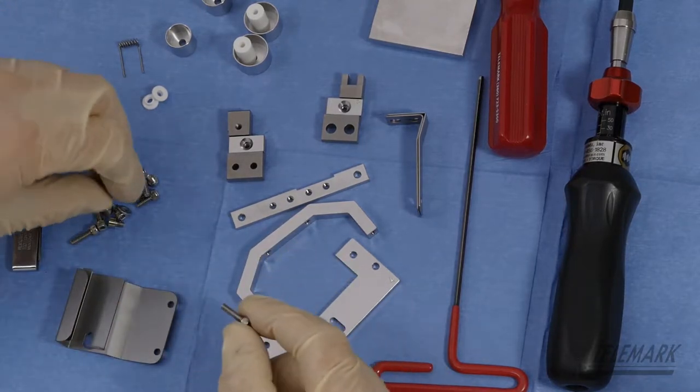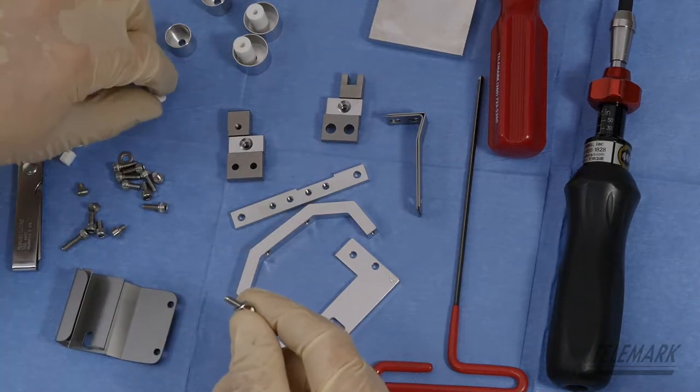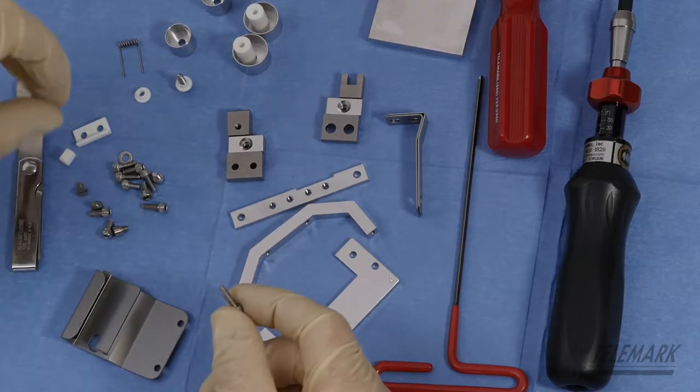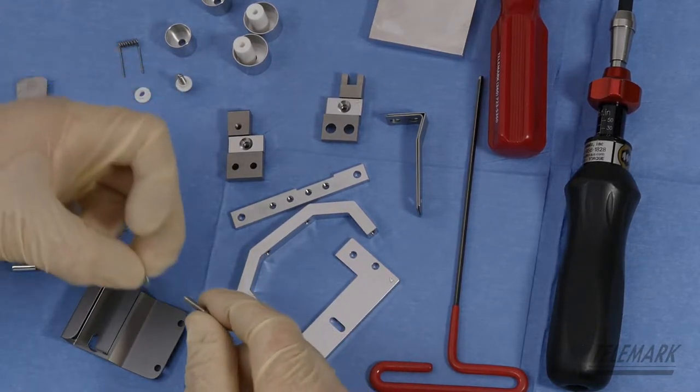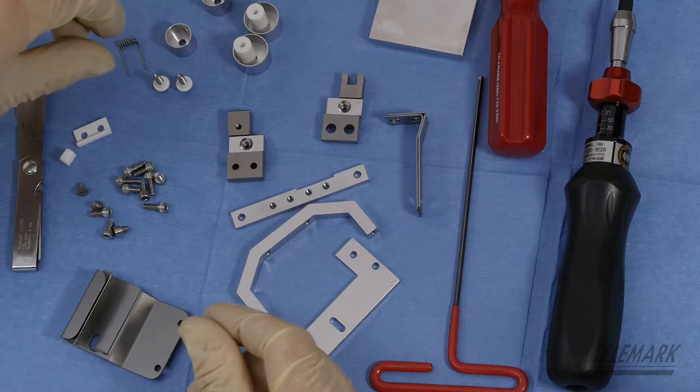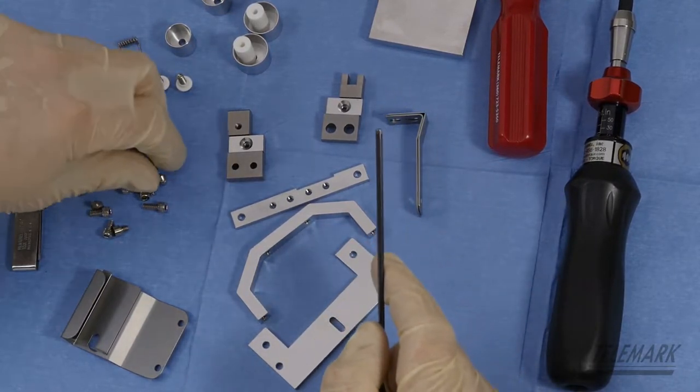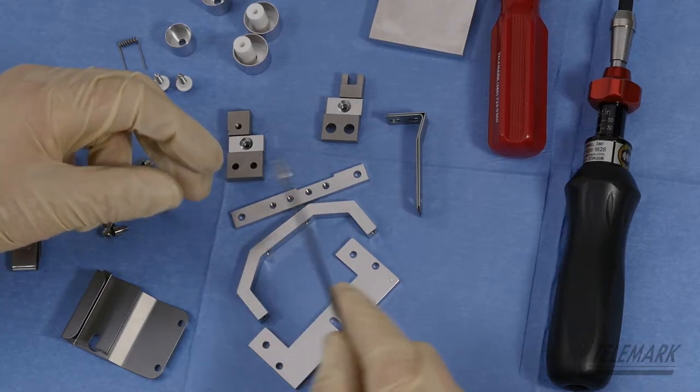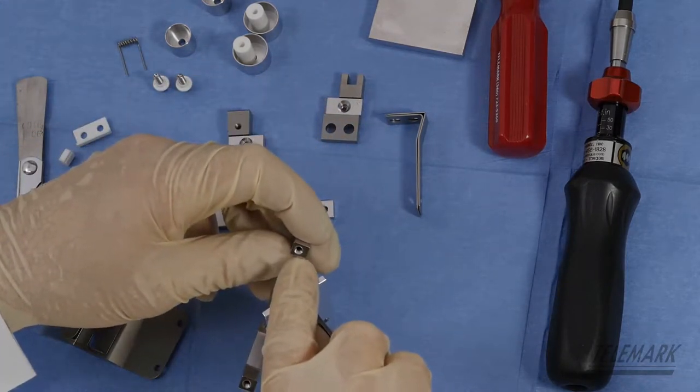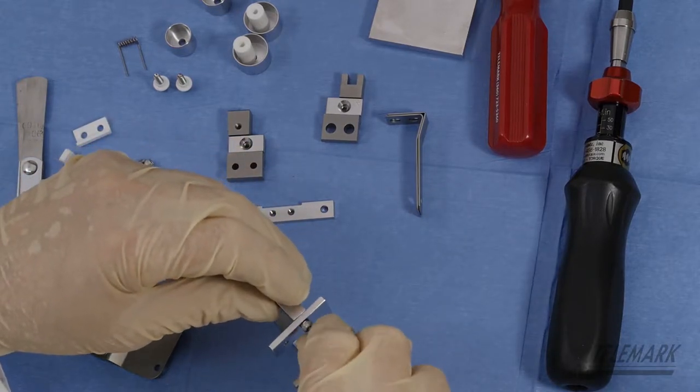Now grab a 6-32 by half inch screw with flat washer and insulator collar. Locate your second 6-32 by half inch flat washer and insulator collar. Grab a 6-32 by quarter inch and start putting your mount bracket and U bracket together, noting that the screw hole is off-center. You want the long side to the bottom.